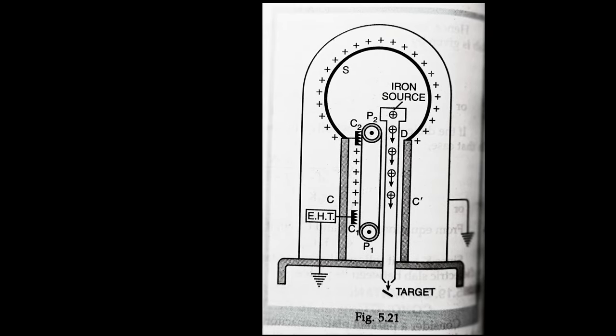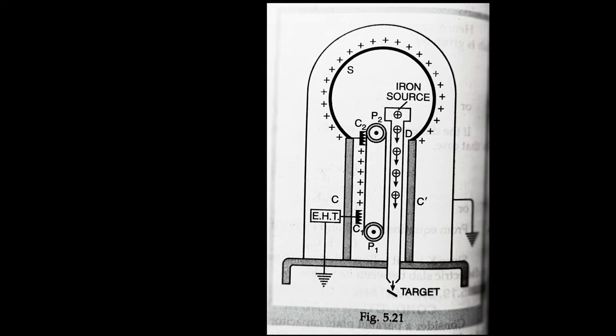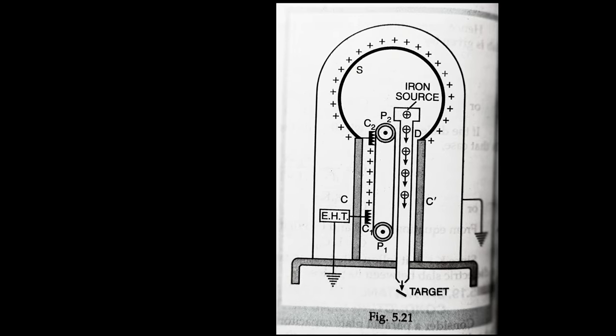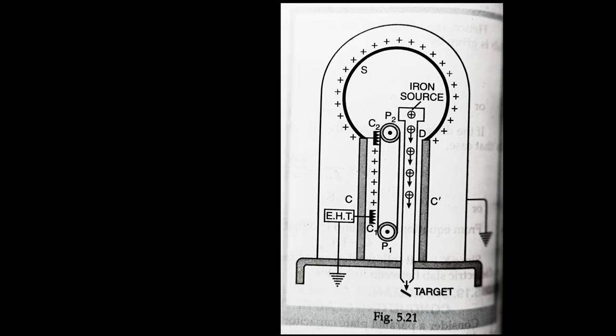To prevent the leakage of charge from the sphere, the generator is completely enclosed inside an earth-connected steel tank which is filled with air under pressure.